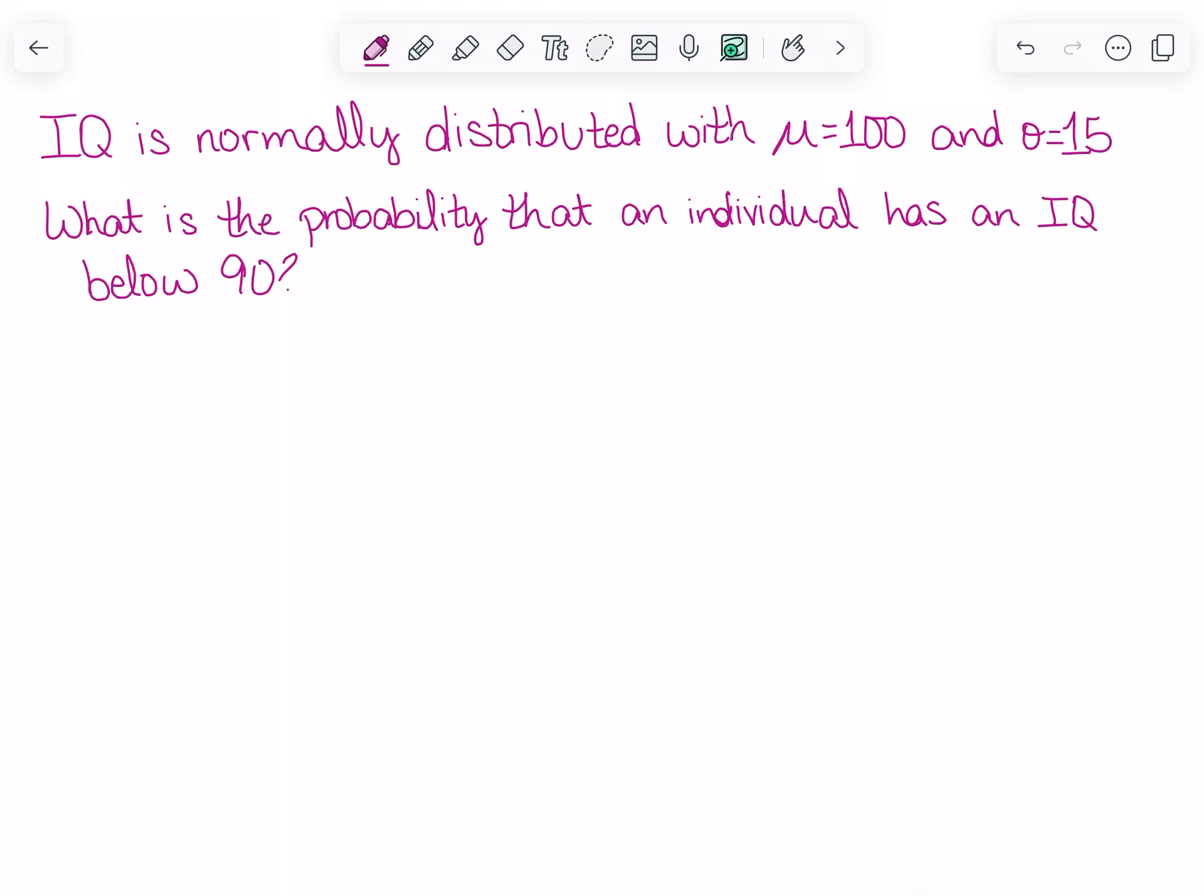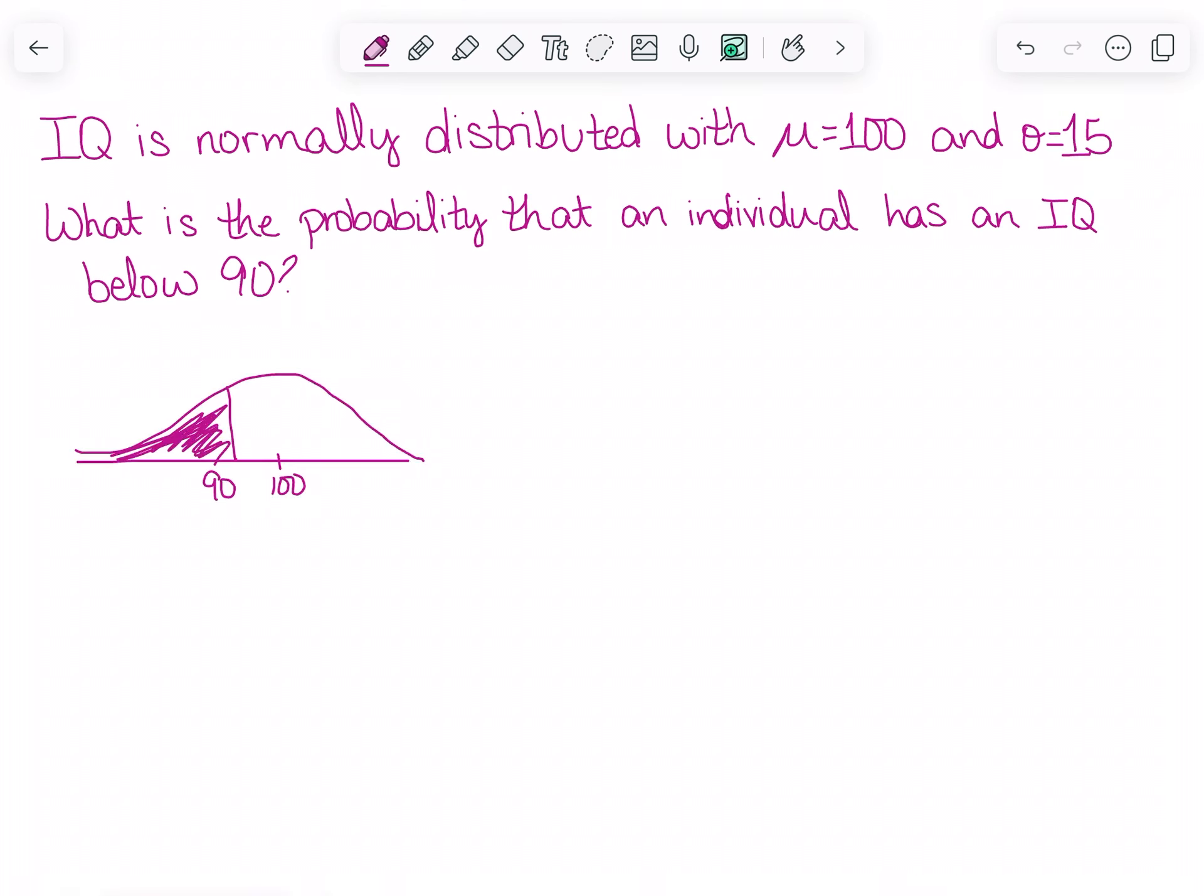I'm going to start by drawing my normal distribution and shading the appropriate area. So here I have my curve. 100 is our mean, so it's at the center. 90 is somewhere to the left, and I've shaded below 90, since I want the IQ below 90.